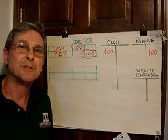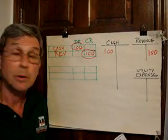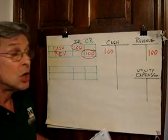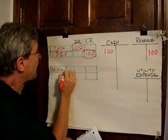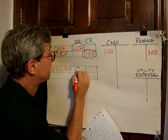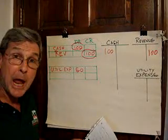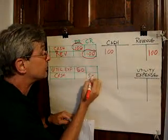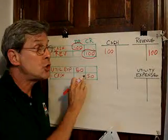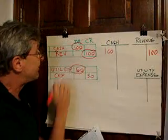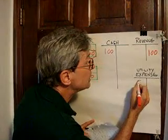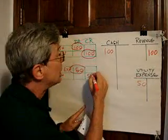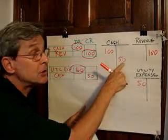Let's take another example. Say I pay a utility bill for $50. I've incurred an expense — expenses are always debits — so I'm going to debit utility expense for $50. And since cash went out of the company, we always credit cash when it goes out, so I'm going to credit cash for $50. When I post this journal entry to the ledger, the debit of $50 to expense gets transferred into the expense account on the left-hand side, and the credit of cash $50 posts to the cash account on the right.